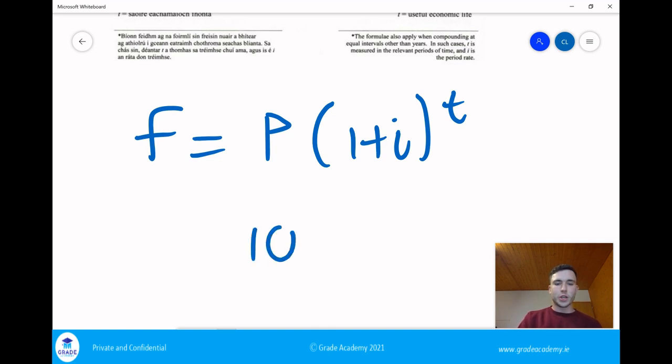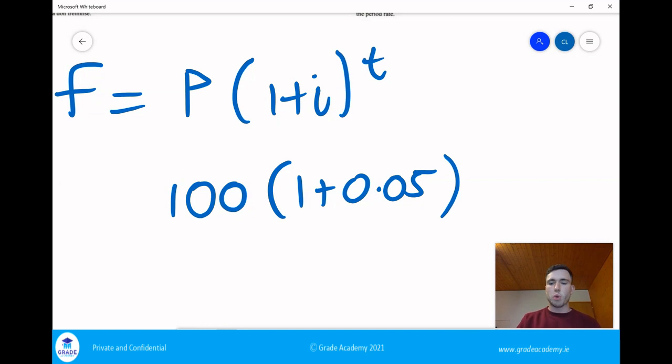We had 100 euro and let's say for example we take t to be 2, so 2 years. We always write our i as a decimal so 0.05 and that's what we'd get after the first year.